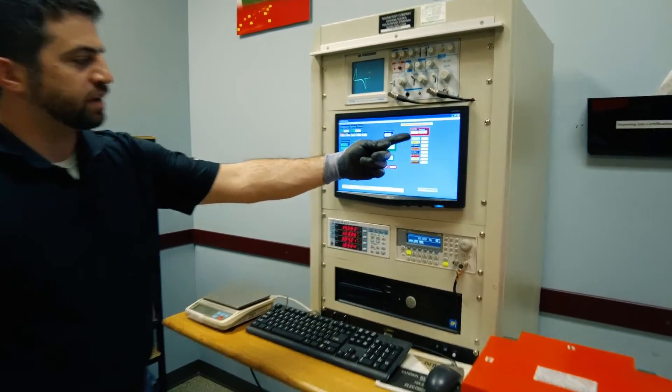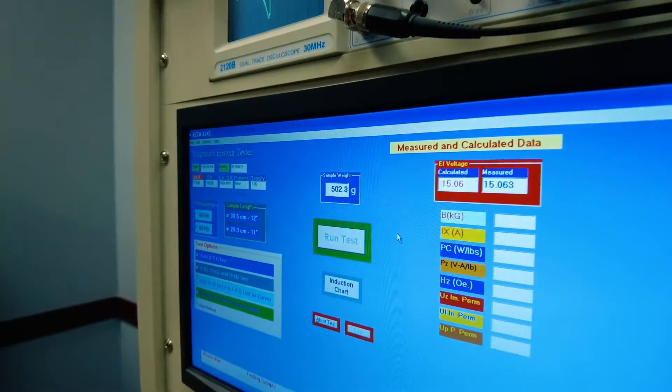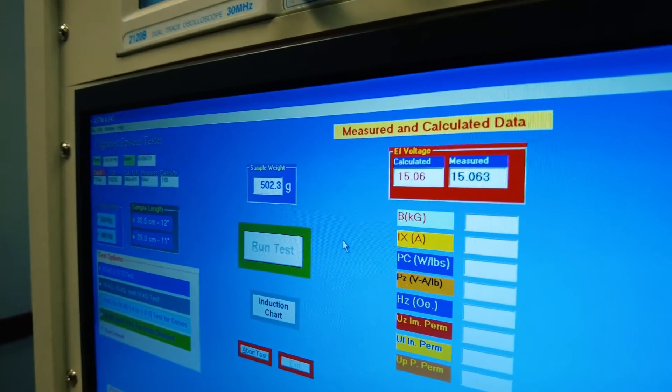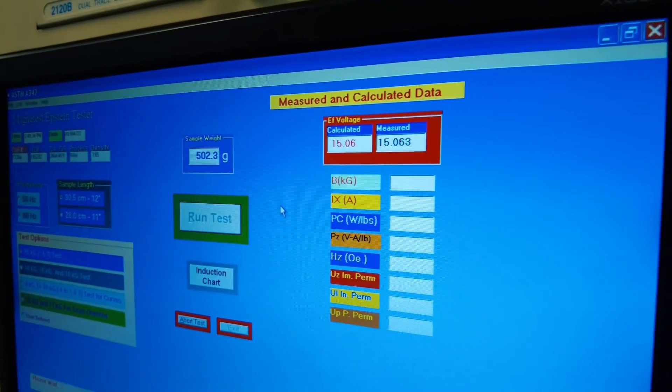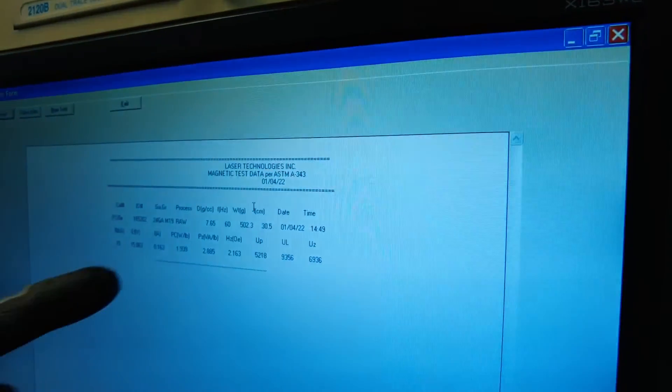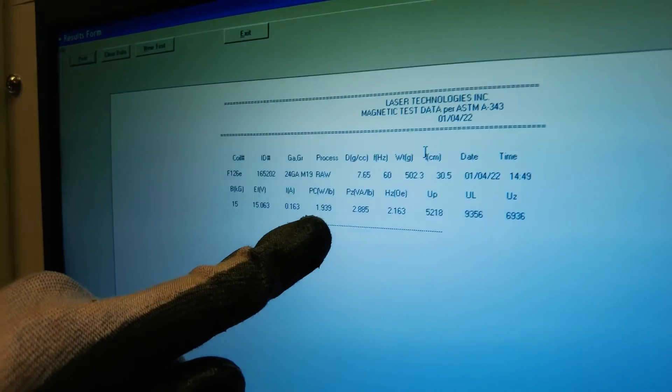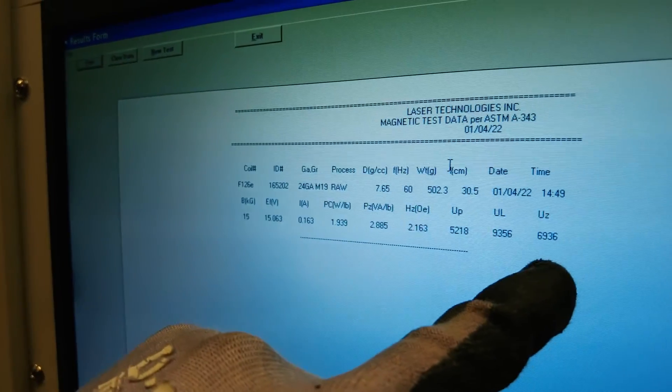You'll see here a calculated voltage versus our actual measured voltages. Once the test is complete, all the parameters will be filled in, and we'll be looking specifically at the watts per pound core loss as well as various permeability numbers.